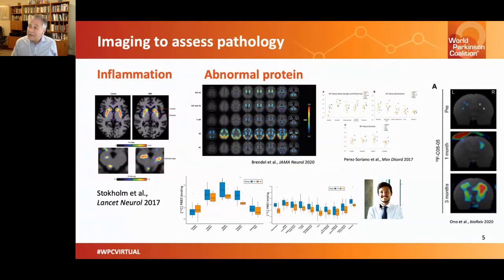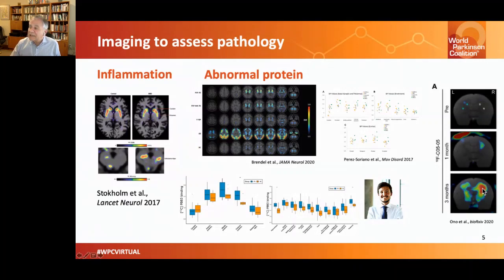Our collaborators in Japan have recently developed another marker that they feel is more specific for alpha-synuclein, as you can see in an animal model of abnormal synuclein deposition. But this is still very early work and evolving.